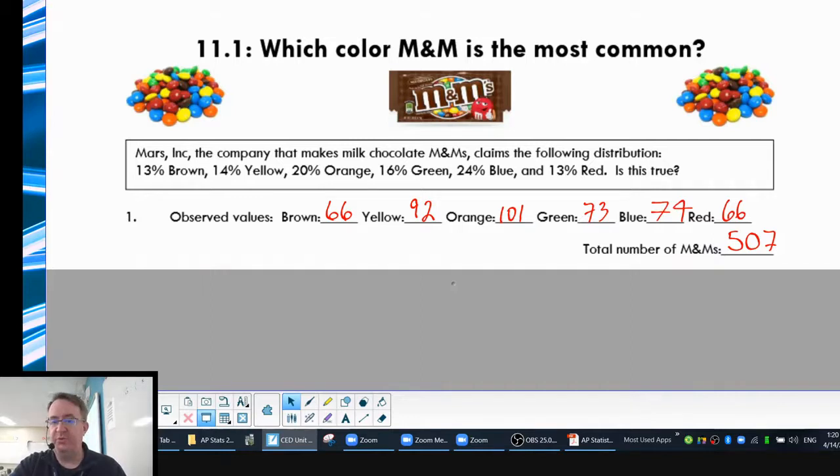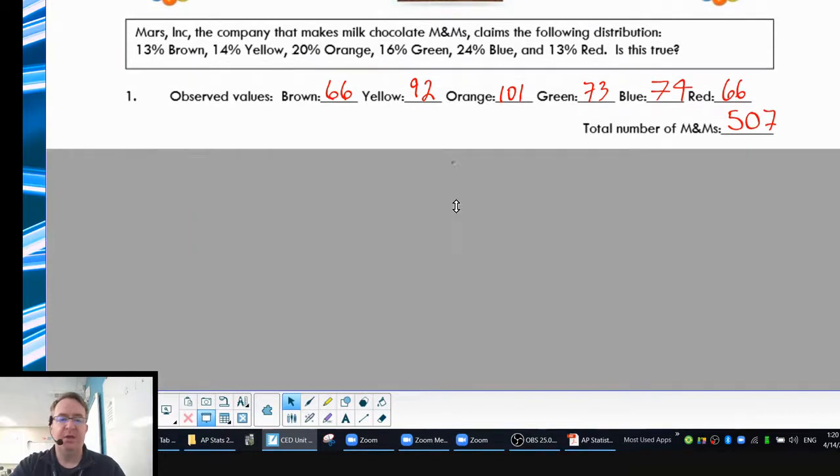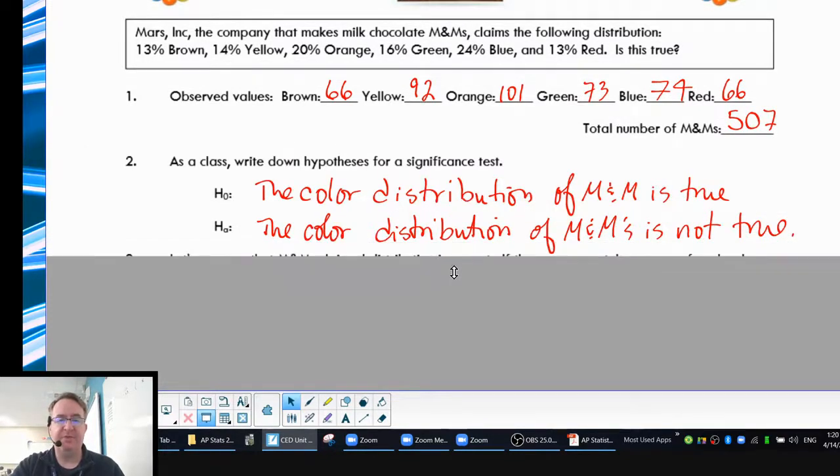The first thing we need to do is talk about what are your hypotheses. The hypotheses are really only two things. Either the null hypothesis says the color distribution of M&Ms is true, so what they tell us is what we see. The only alternative for that is it's not true. Now, one thing you may have already noticed is that we're doing this for categorical data. They're fitting into categories of red, blue, green, yellow, that type of thing. And so that's what chi squared is using, but we'll talk more about that over the next couple of days.